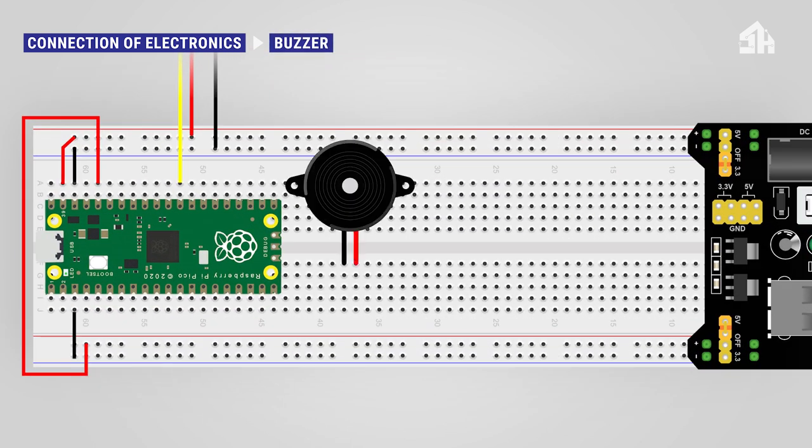For installing the passive buzzer, connect the longer end of the buzzer to GPIO 6 pin and connect the shorter end of the buzzer to the GND pin.